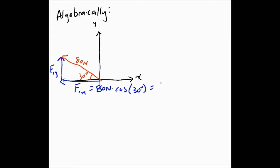So this would be the hypotenuse times the cosine of 30, because this is the adjacent side, which comes out to be 69.3 newtons. And then this one is 80 newtons times the sine, and that comes out to be 40 newtons.